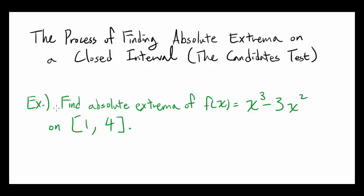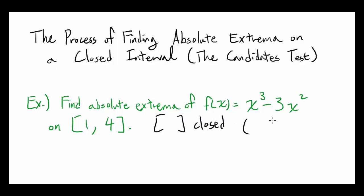Let's start by looking at the example, which states: find absolute extrema of f(x) = x³ - 3x² on the closed interval [1, 4]. These brackets indicate a closed interval. If it were parentheses, it would be an open interval.